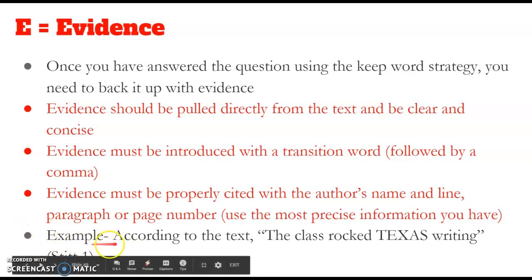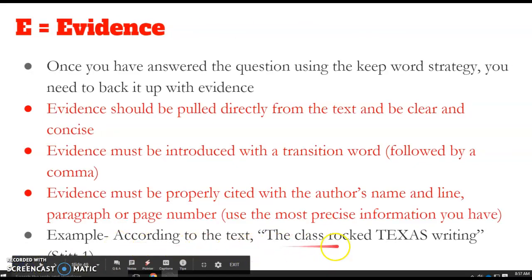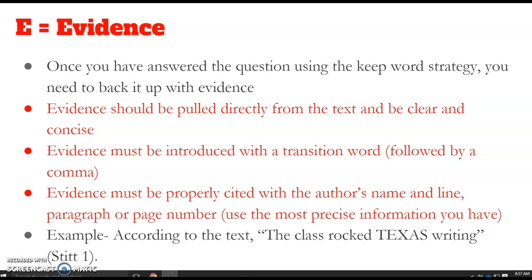So here's a great example of evidence cited in your paper. According to the text, the class rocked Texas writing. Now, this was found in the article Stitt on page 1. So you see how I've used a transition word according to the text. I've used this transition phrase, and I've also quoted the author's words, not mine, by putting quotation marks around the evidence. And I've also cited where I found the evidence. I found it in Stitt. He's the author of the article, and it's on page 1. These are in parentheses. This is how you properly cite evidence.